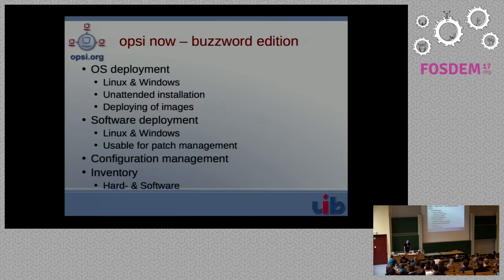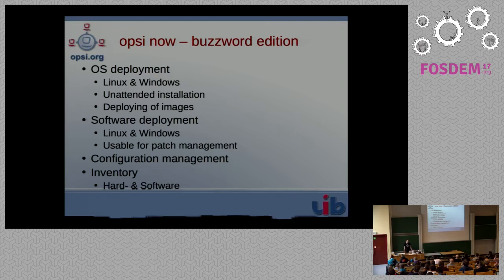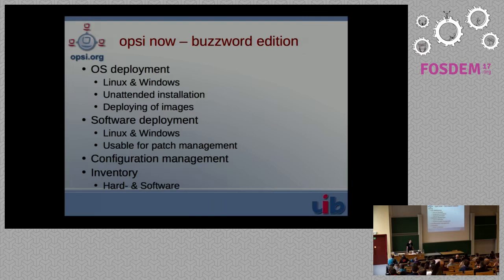Here are the buzzwords to give you an overview of what Opsi does. We still do operating system deployments, still relying on unattended installation. We don't just support Windows — we also support Linux. You can nowadays also deploy complete images of your systems if an unattended installation takes too long or if some software is hard to install that way. Software deployment is still a thing because just an operating system usually isn't enough — you also need software on that machine, and that's something Opsi also does.